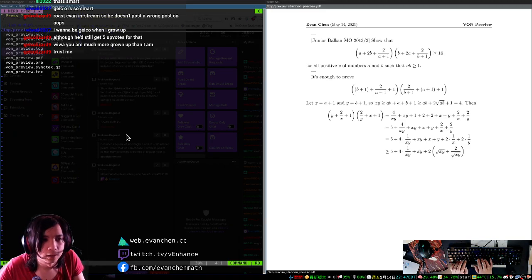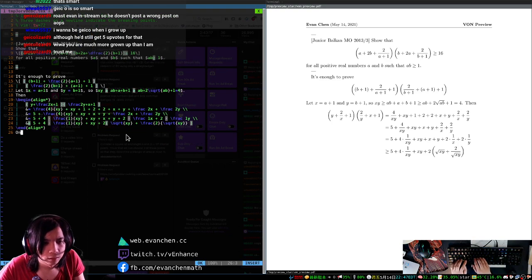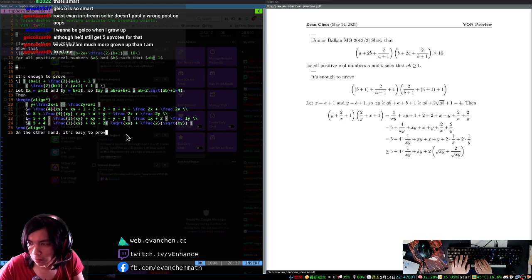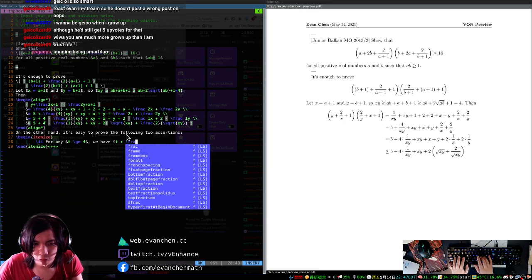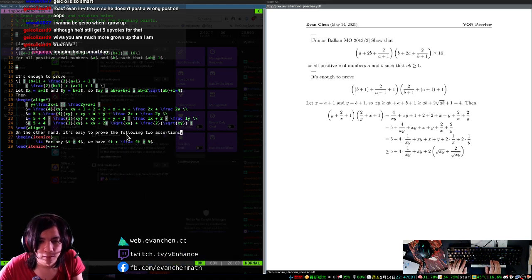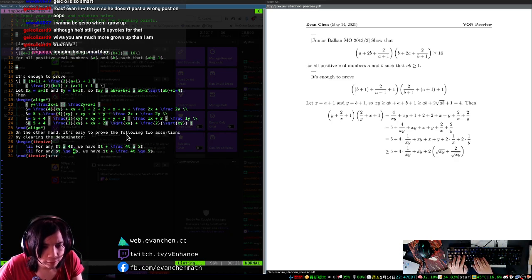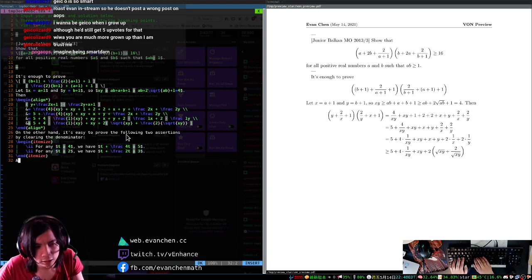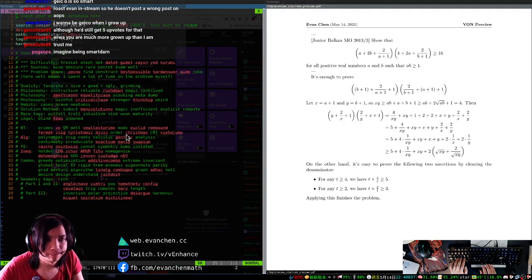Oops. I didn't need to do that. What did I just do? For any T at least 4, we have T plus 4 over T at least 5. For any T at least 2, we have... Okay. Excuse me. Okay. Okay. Let's do this. Sure. Okay. There we go.